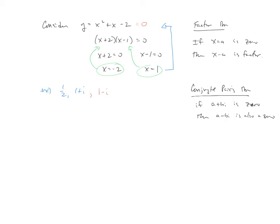So we want to create a polynomial with these three zeros. So again, we're just going to follow the last example backwards. I'm going to have x equals one half as a zero, x equals one plus i, and x equals one minus i as a zero.